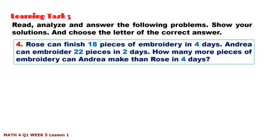Number 4: Rose can finish 18 pieces of embroidery in four days. Andrea can embroider 22 pieces in two days. How many more pieces of embroidery can Andrea make than Rose in four days?